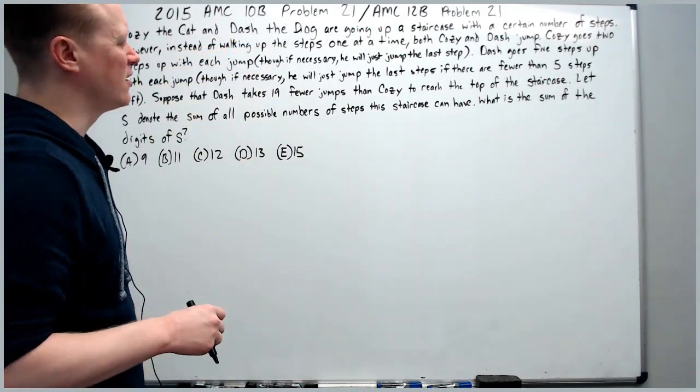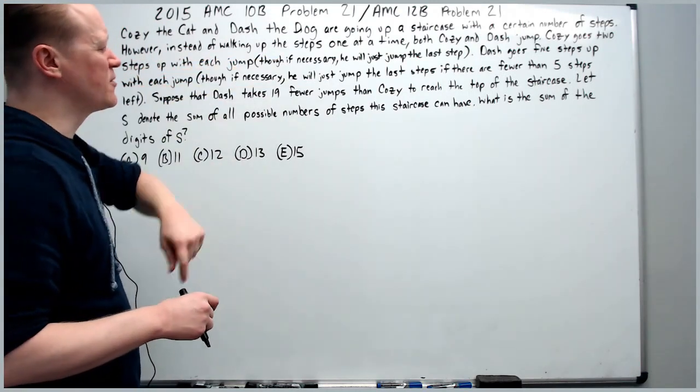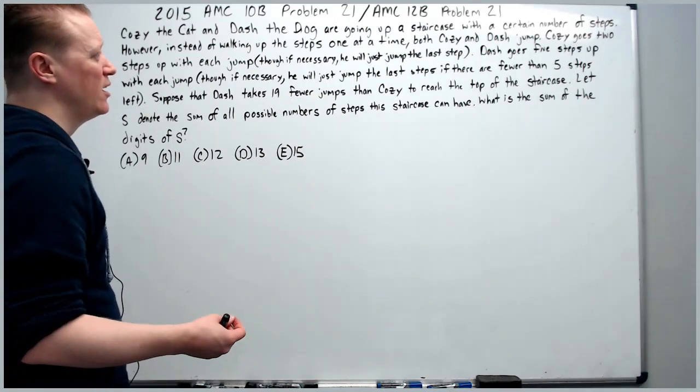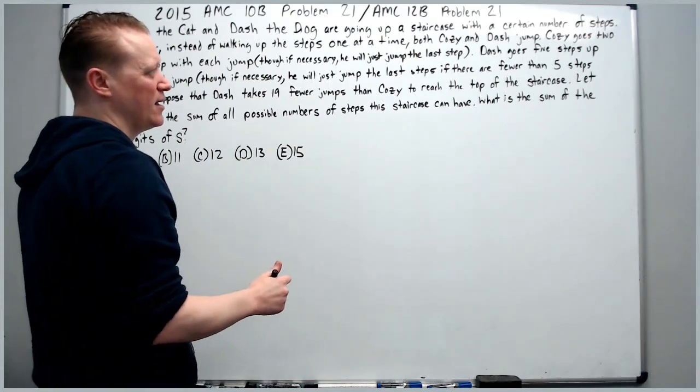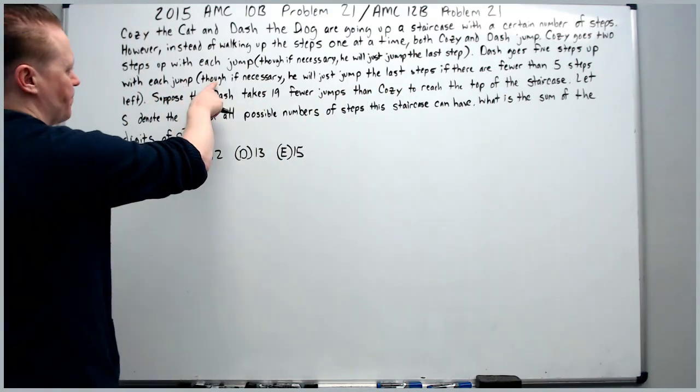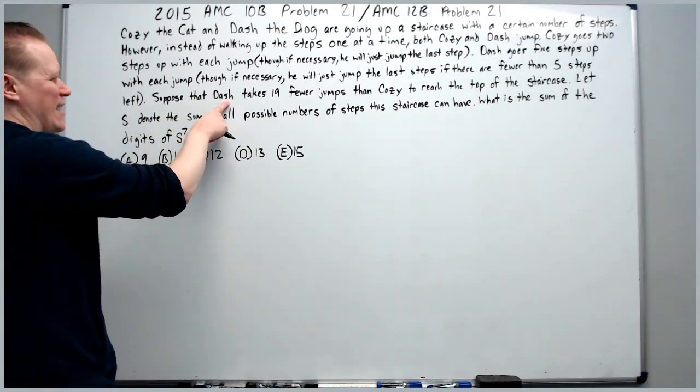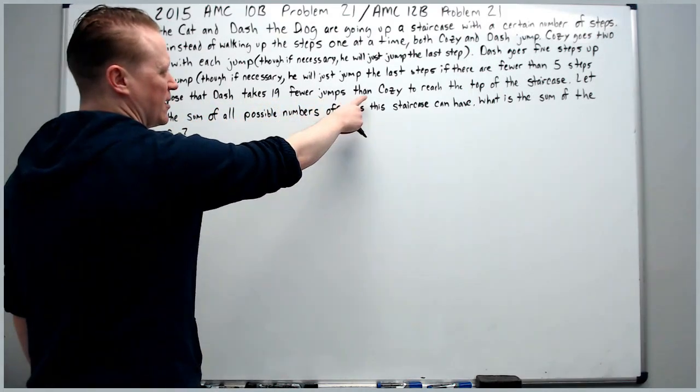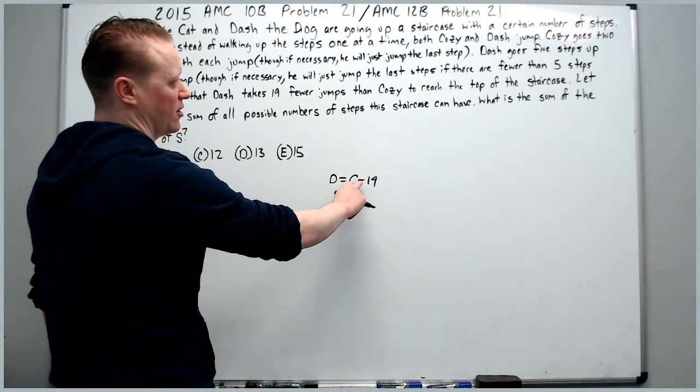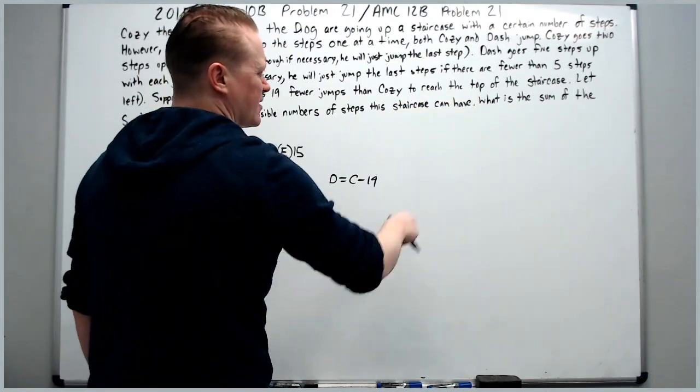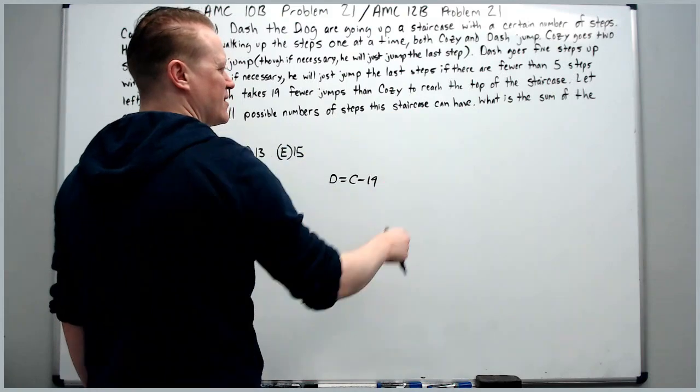Cozy the Cat and Dash the Dog are going up a staircase with a certain number of steps. However, instead of walking up the steps one at a time, both Cozy and Dash jump. Cozy goes 2 steps up with each jump, though if necessary he will just jump the last step. Dash goes 5 steps up with each jump, though if necessary he will just jump the last steps if there are fewer than 5 steps left. Suppose that Dash takes 19 fewer jumps than Cozy. To reach the top of the staircase, let S denote the sum of all possible numbers of steps this staircase can have.